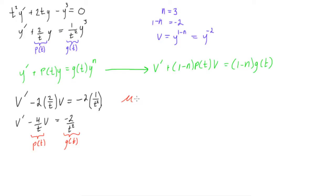So, μ of t is equal to e to the power of the integral of p of t dt. So, we get e to the power of negative 4 times the integral of 1 over t dt. And then we continue with this. We get e to the negative 4 times ln of t. And this is all going to become equal to 1 over t to the power of 4, using exponent rules. Okay, so now we know that μ is equal to 1 over t to the 4th.